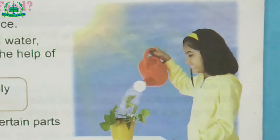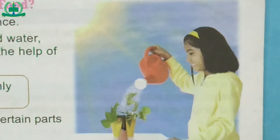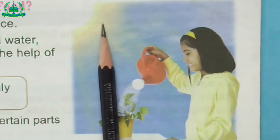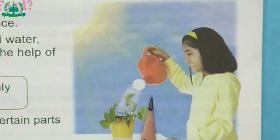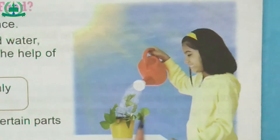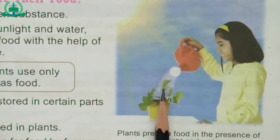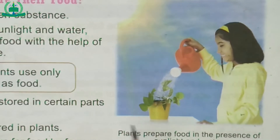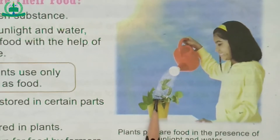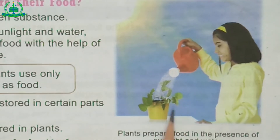How do plants prepare their food? Plants contain a green substance, and in the presence of sunlight and water, plants prepare their food with the help of this green substance. The rest of the food is stored in certain parts of the plant. We eat the food stored in plants. Many plants are grown for food by farmers.